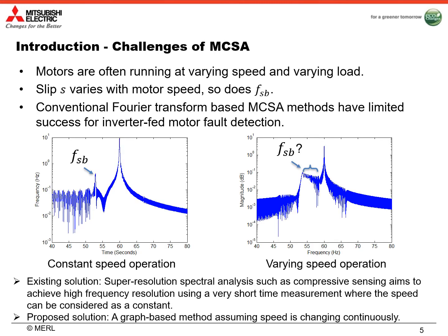However, nowadays motors are often fed by inverters and running at varying speed and varying load to save energy. In this situation, the motor slip varies with motor speed, and so does the fault frequency component. Therefore, conventional Fourier transform-based MCSA methods have very limited success for inverter-fed motor fault detection. If the motor is running at a constant speed, then the fault frequency component will spread out in a certain frequency range with relatively lower magnitude, making it more difficult to detect.